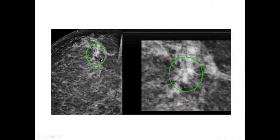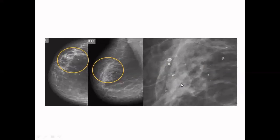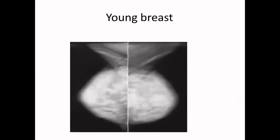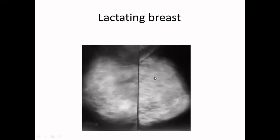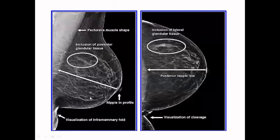An example of magnification mammography: on the conventional CC view some architectural distortion is seen; on the magnification view a spiculated appearance with calcifications becomes visible. Another example shows many calcifications — on the magnification view, all are peripherally dense and centrally lucent, consistent with oil cysts or fat necrosis, which are benign. Mammography has disadvantages especially in young breasts with more glandular element and in lactating breasts, so ultrasound is supplemented in such cases.